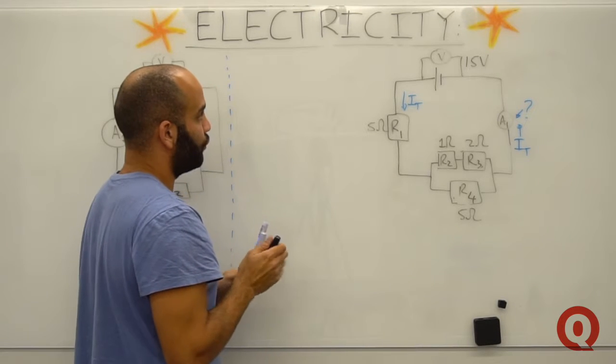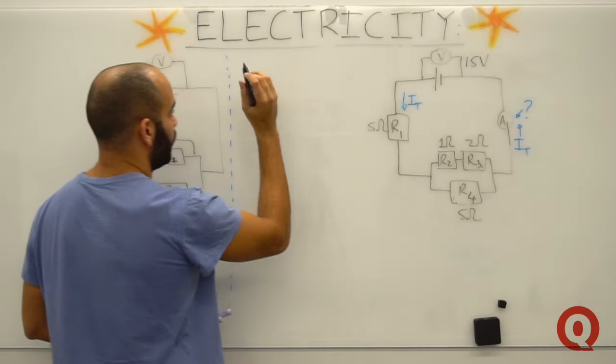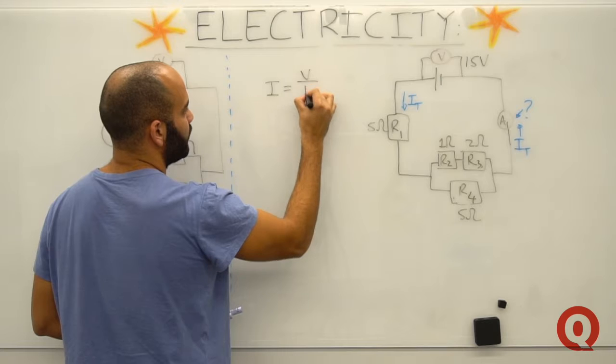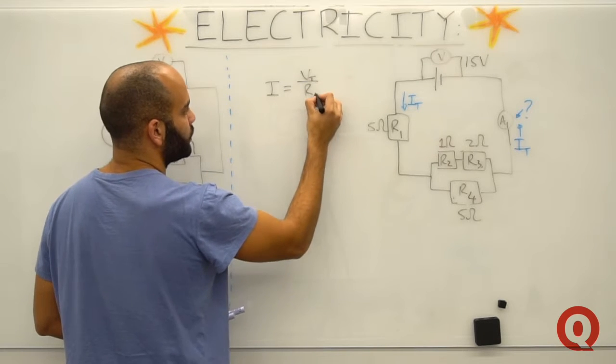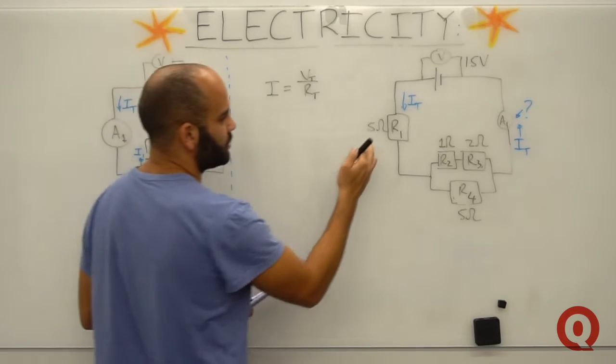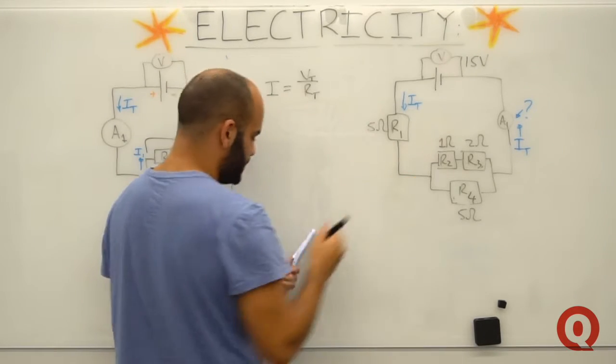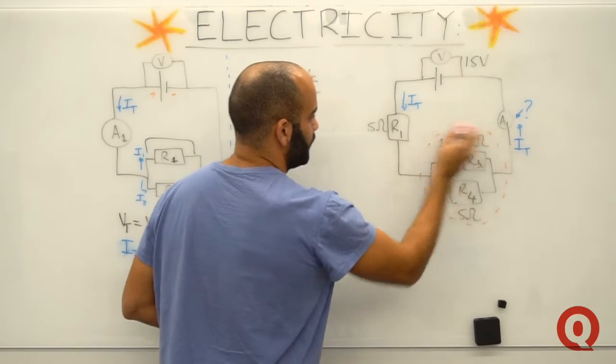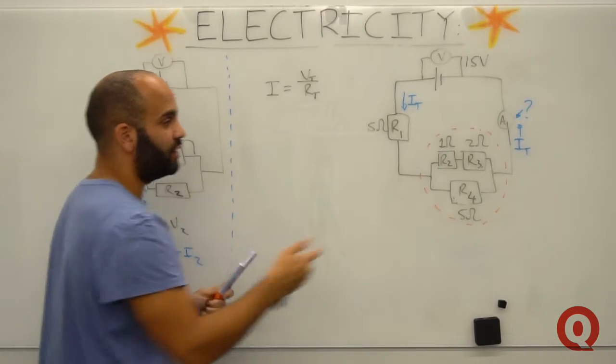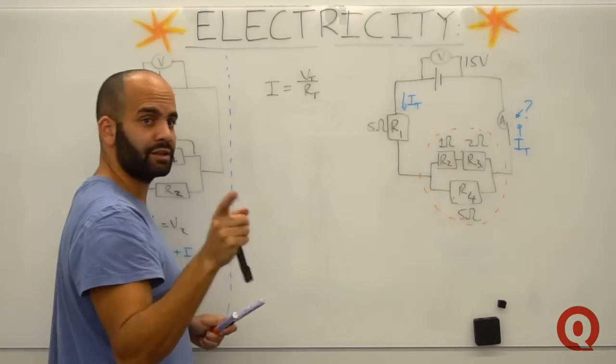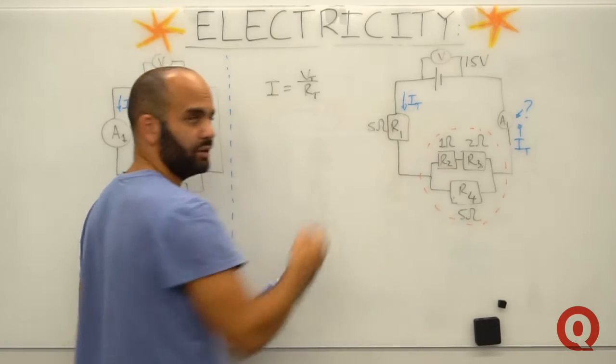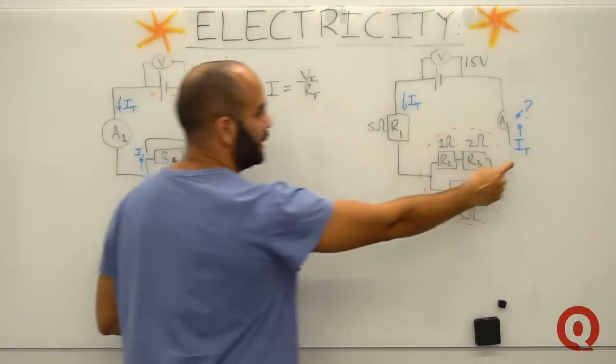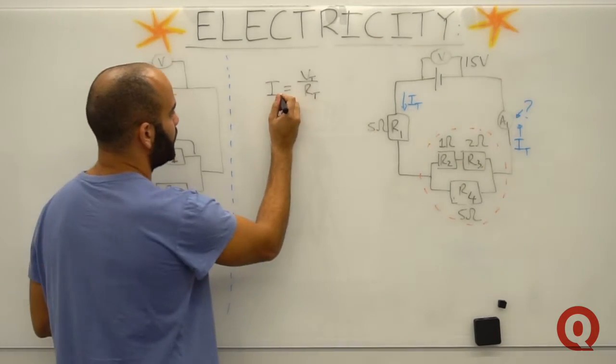Now think back to this question and look that the current here at ammeter 1 is actually the total current. Remember, it's the same as the current flowing here. Because I know in a series circuit, the current is the same. So what would my first step be in trying to get this? I understand Ohm's law and I know that current is equal to the voltage divided by the resistance, which is the total voltage and total resistance. But I can't just add this with that because this is a parallel network, and this is series. So I have to convert this network first from a parallel network into a series network.